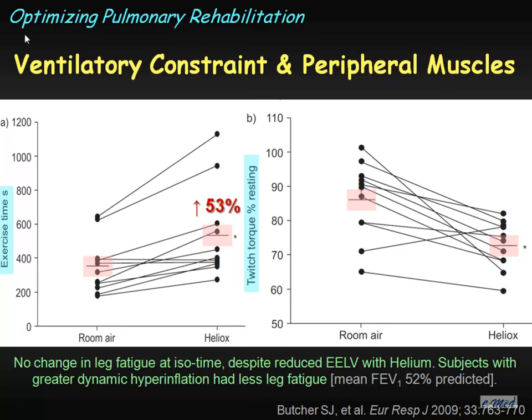In our laboratory, Scott Butcher looked at the peripheral effect of altering those inspired gases and the consequences for peripheral muscles. We looked at exercise duration under room air versus helium hyperoxia conditions, achieving a 53% improvement in exercise duration. But we also looked at muscle function — specifically the twitch torque of the quadriceps muscle as a percent of resting under those two situations at the same duration of exercise. When subjects were exercising under helium hyperoxia, their maximal twitch torque at that time — the stress the peripheral muscles were being asked for — was significantly reduced compared to room air. So the changes in the respiratory system had significant, quite meaningful consequences for the peripheral muscles, even acutely.